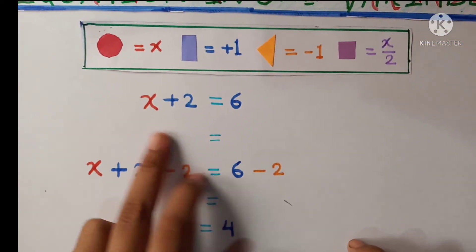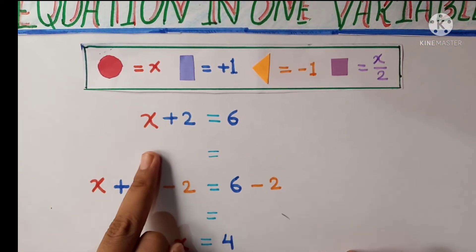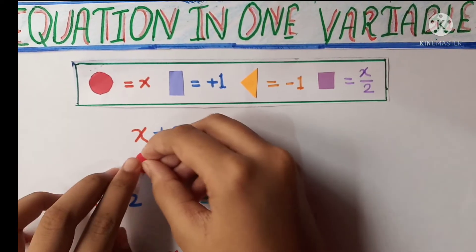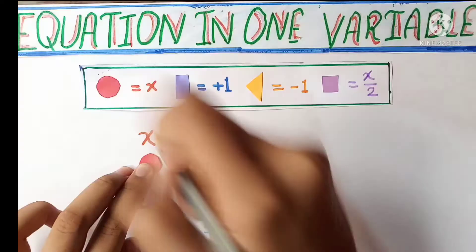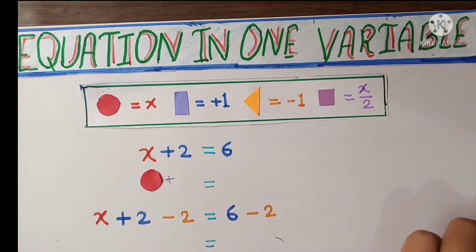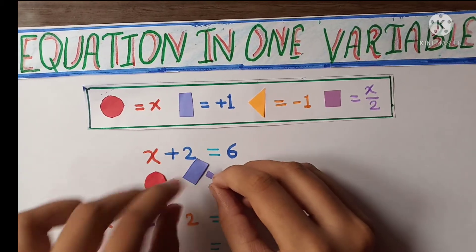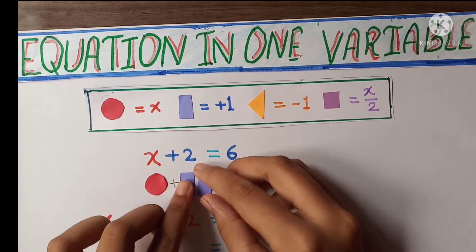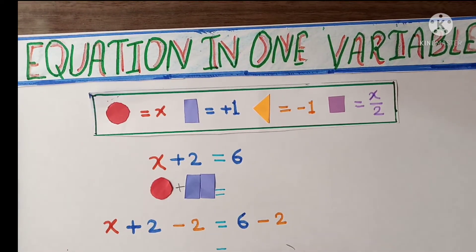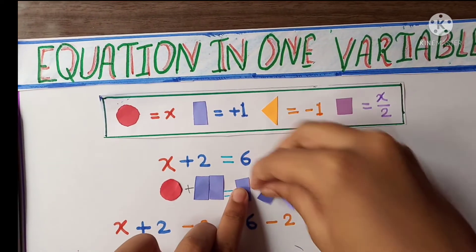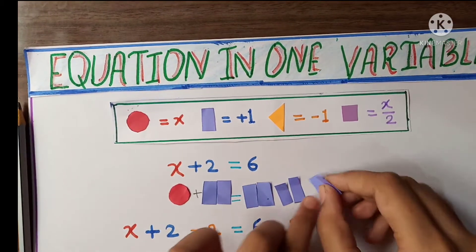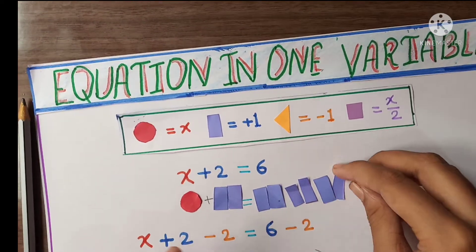So now let's solve this. Here is our first equation, x plus 2 is equal to 6. So let's take our x, this circle is our x plus 2. So here let's take two symbols of this plus. Here our two symbols of plus equals to 6. Here let's put the 6. So here are our 6 symbols.